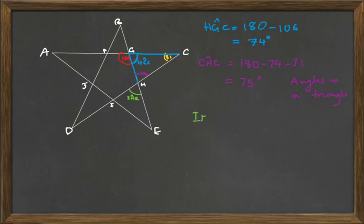Now, I, H, E. We know that I, H, E is equal to C, H, G, the purple angle, because they are vertically opposite. So that's 75 degrees.